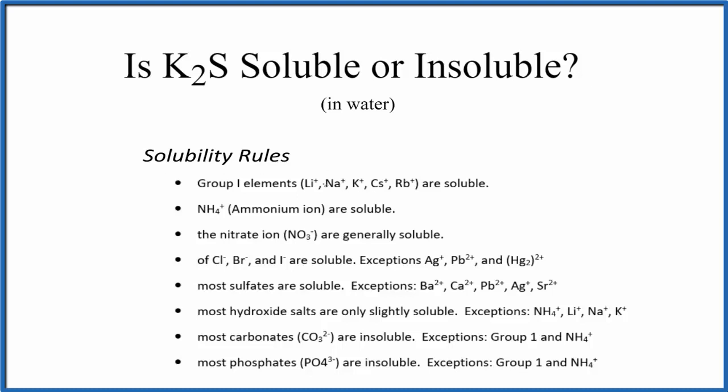If we look at the solubility rules here, this generalized set of solubility rules, group 1 elements are soluble, and there's potassium. So we would expect that potassium would be soluble in water based on our solubility rules. We have a group 1 element, should be soluble.